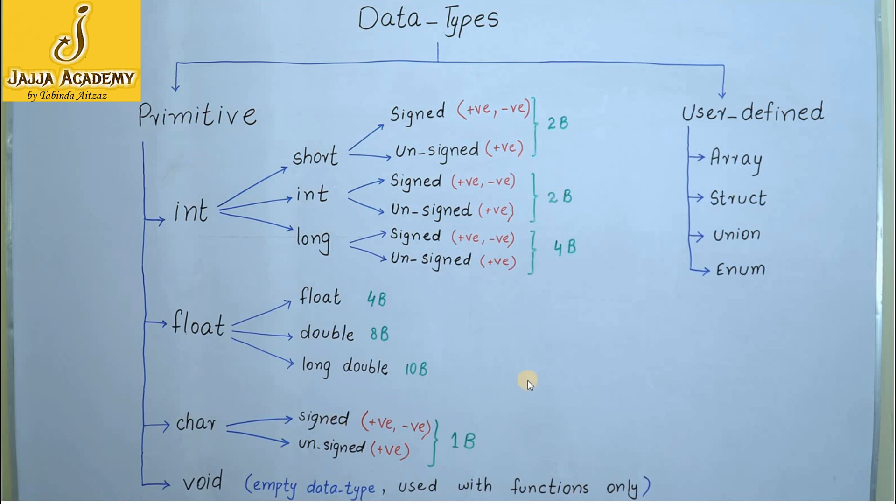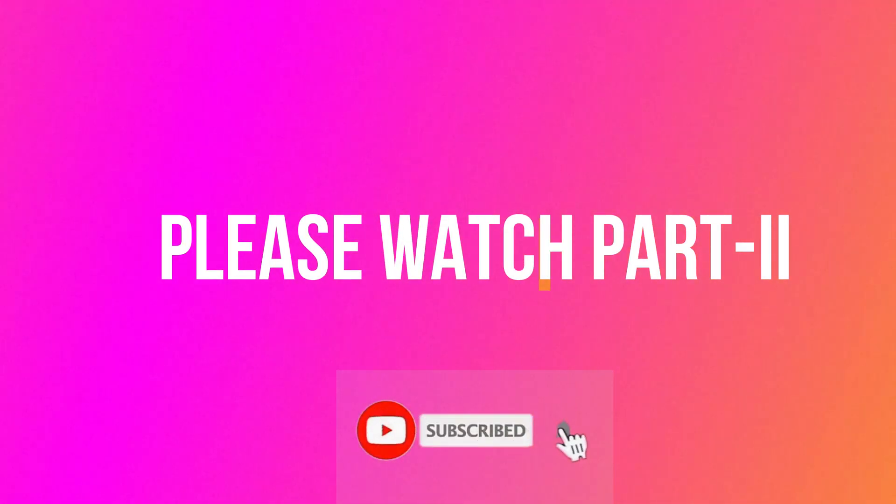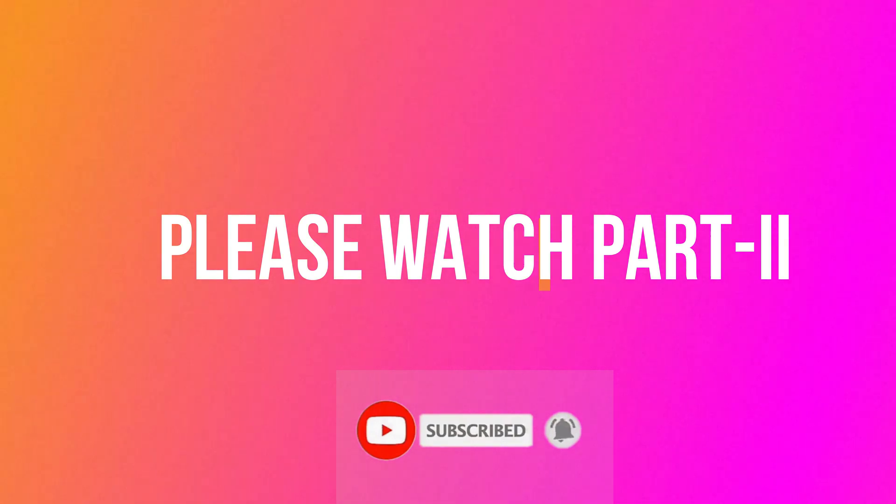Now let us see some examples of primitive data types.